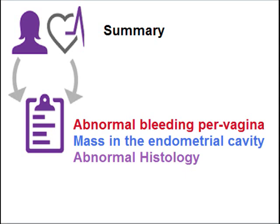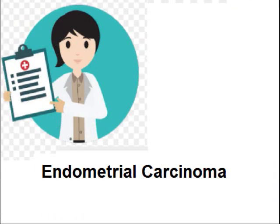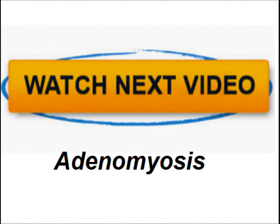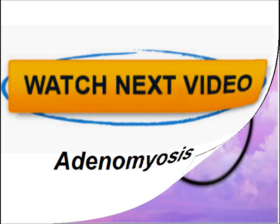In summary: the clinical presentation is abnormal bleeding per vagina, with a mass in the endometrial cavity and abnormal histology — the diagnosis is endometrial carcinoma. The next video will cover adenomyosis — its presentation and microscopic features.